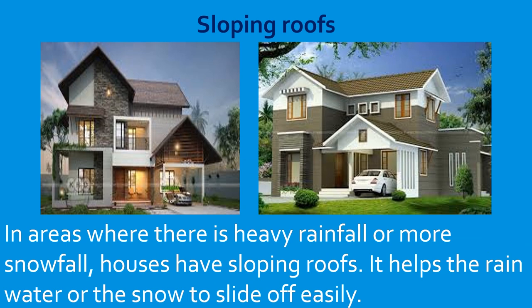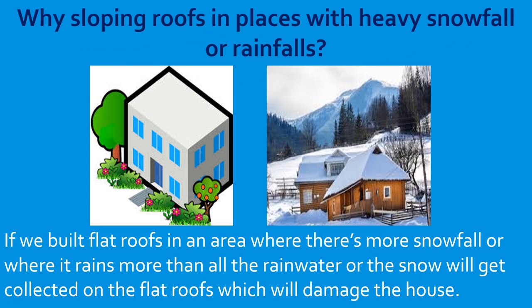Depending upon the climatic conditions, we build our houses accordingly. Why do places with heavy rainfall or snowfall have sloping roofs? If we build flat roofs in areas with heavy rain or snow, all the rainwater or snow will collect on the flat roof and damage the house. So sloping roofs are built in such areas so that water and snow slide down and the house is not damaged.